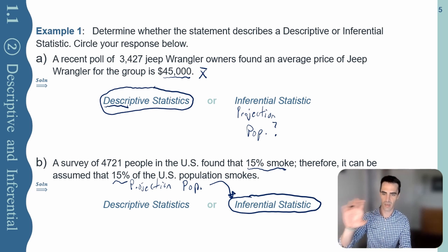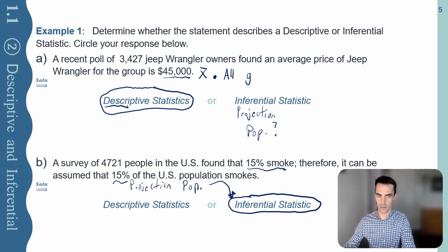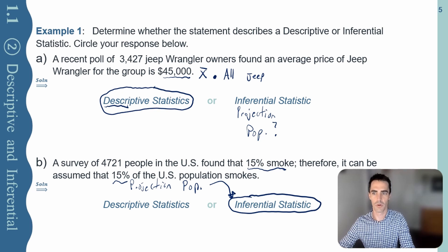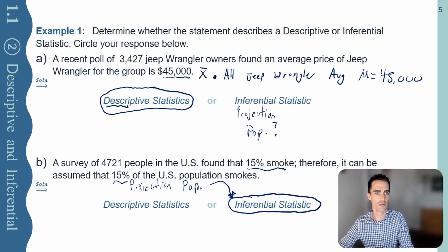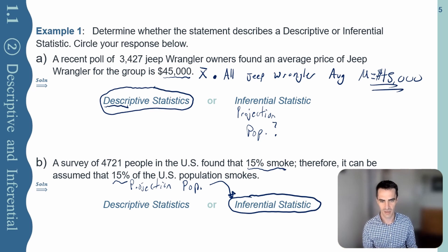It's not necessarily just because we have an average versus a proportion that we get descriptive or inferential. It's very easy to change these to be one or the other. For instance, if for the Jeep Wrangler example I added 'all Jeep Wranglers have an average cost of $45,000,' then that $45,000 is not a descriptive statistic — it's inferential because it's from the population. Just because it's average versus proportion does not make it necessarily inferential versus descriptive.